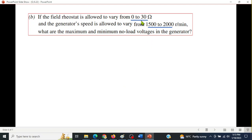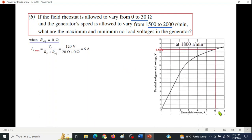Now part B, as I mentioned, there are two variations. This is from 0 to 30, and the speed is from 1500 to 2000. So the first case, we take the R adjustments at 0, IF is 6 ampere as we calculated earlier as well, and so from the graph it is 135 volt.